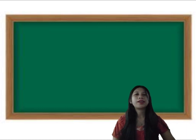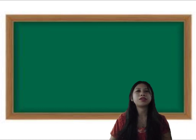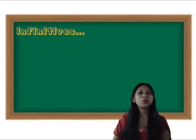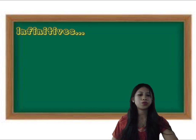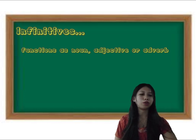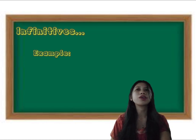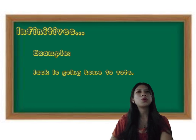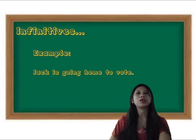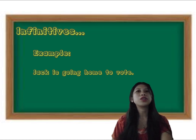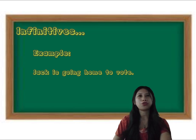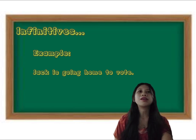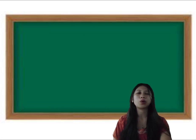The third and last type of verbals is infinitives. So when we say infinitives, it always functions as nouns, adjectives, or adverbs. The example for this is: "Jack is going home to vote." So the word "to vote" here is the infinitive form of the verb "to vote." In this example, it is functioning as an adverb, telling us why Jack is going home.